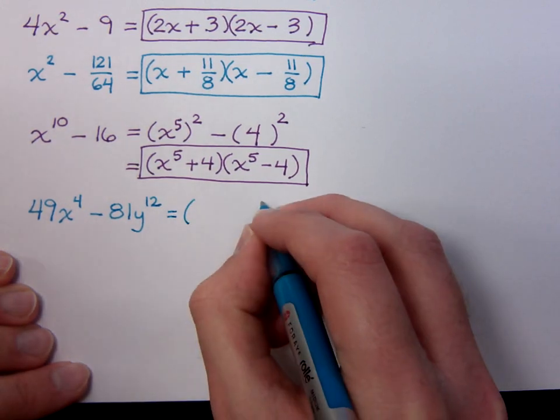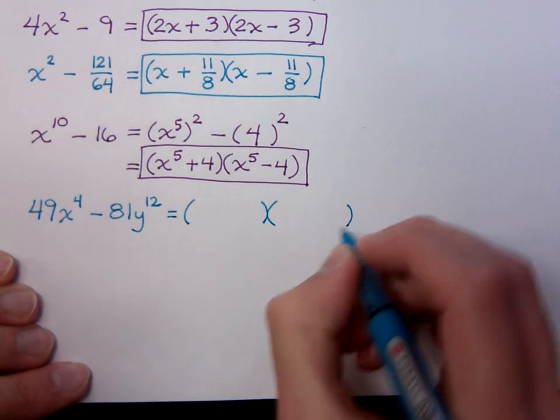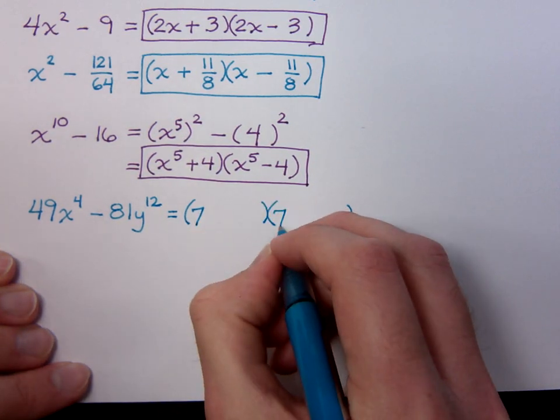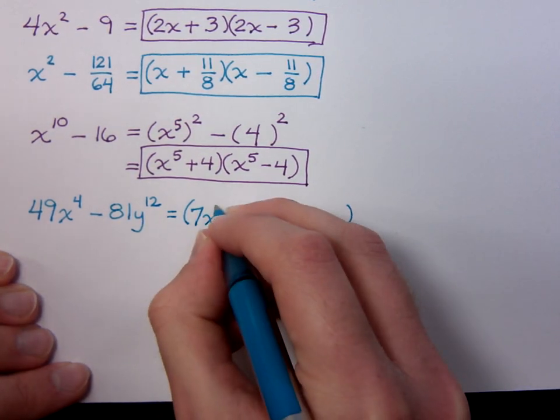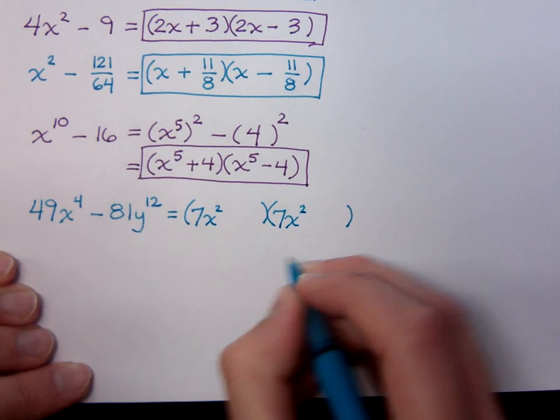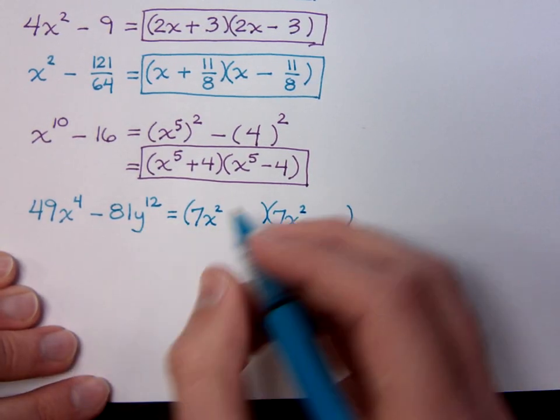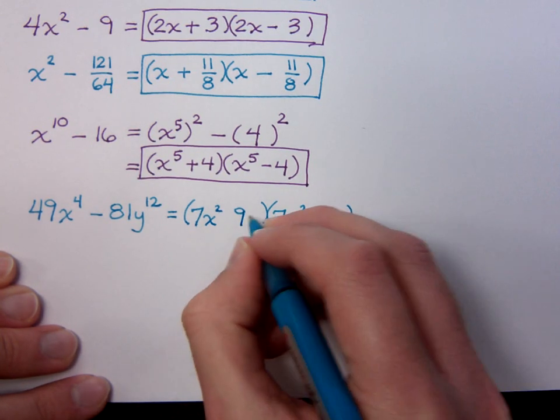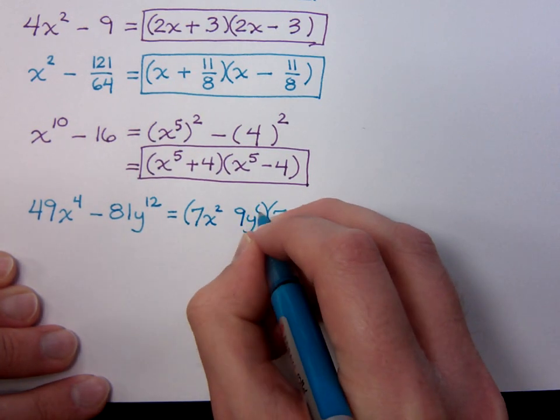So if I try to break these guys down evenly, so to speak, in terms of their factors. 49 breaks down as 7 and 7. And that's going to be x² for both of them. 81y^12 will be 9 and 9. And that 12 is going to break down as 6 and 6.